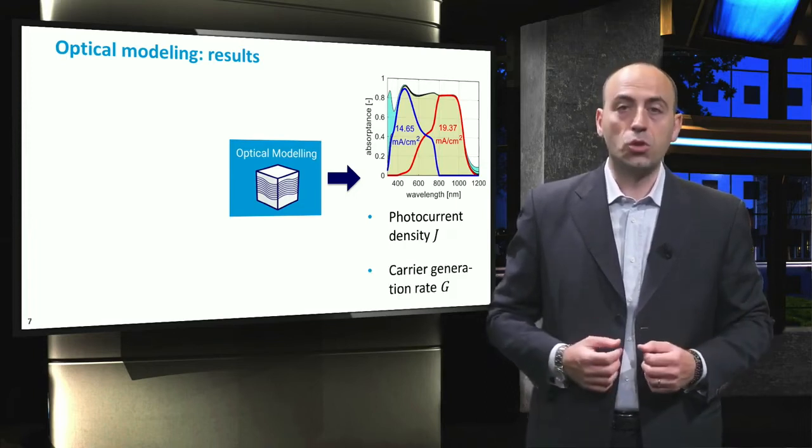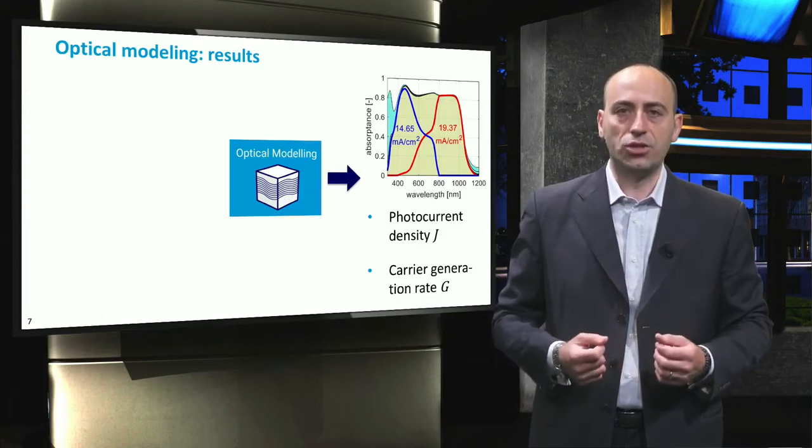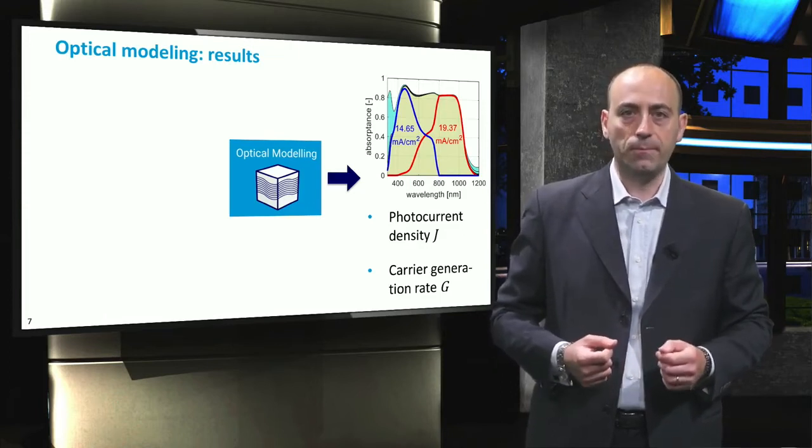Then, information about absorption in the active layer can be converted into the generation rate of charge carriers indicated with G. This quantity is of great importance, since it is one of the fundamental input parameters for electrical simulations, as explained later in the course. Depending on the selected modeling approach, this parameter G is determined only as a function of the depth within the device, hence as function of only one dimension, or as a function of the exact three-dimensional position inside the solar cell.